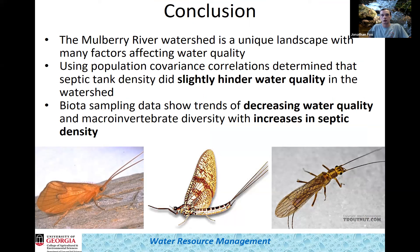In conclusion, this is a very unique watershed with diverse land usage and many factors affecting water quality. Using population covariance correlations, we determined that septic tank density did have a slight hindering effect on water quality in the watershed. Those same values also showed decreasing macroinvertebrate diversity with increases in septic tank density.